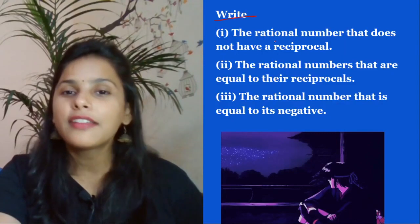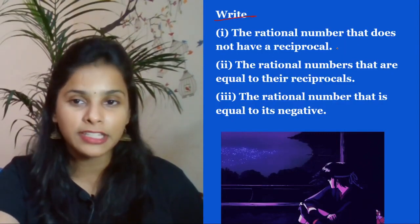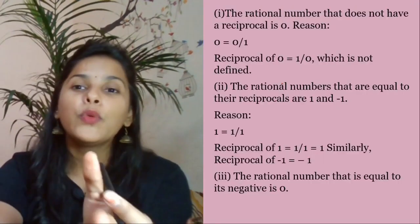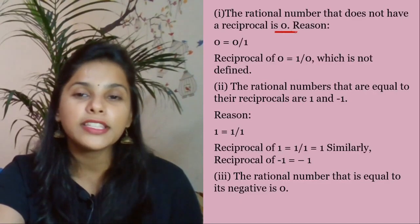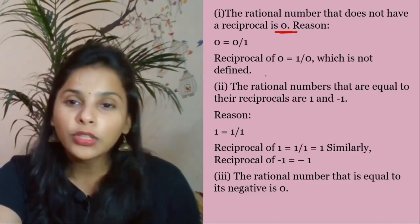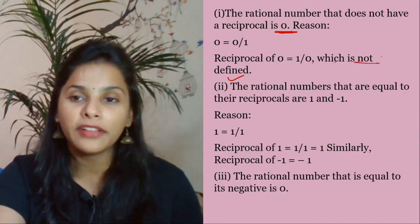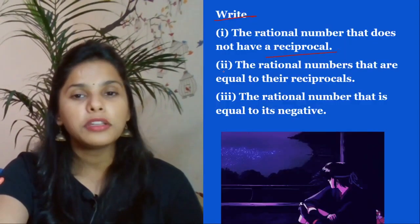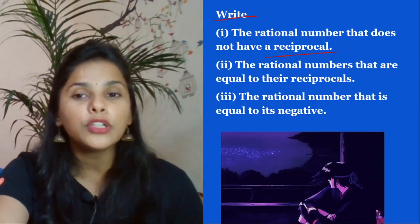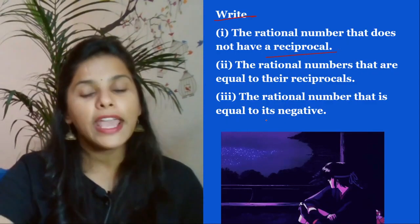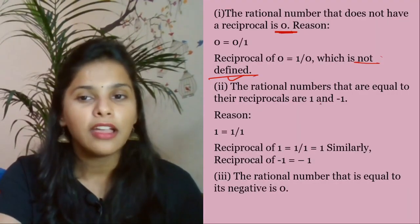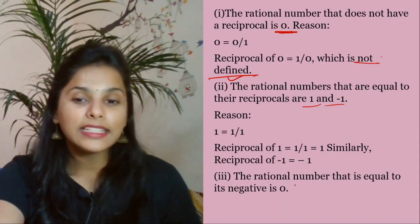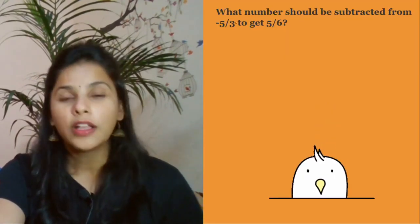Next question: write the rational number that does not have a reciprocal. The reciprocal of 0 is not defined — so 0 is the answer. Question 2: the rational numbers equal to their own reciprocal are 1 and −1. The rational number equal to its negative is 0.